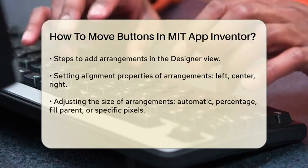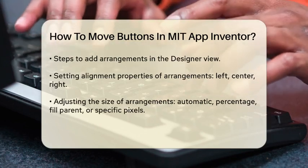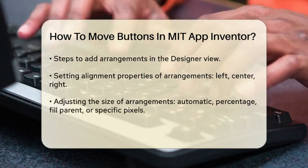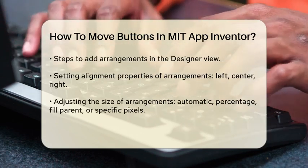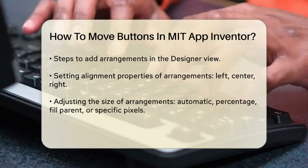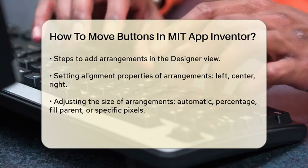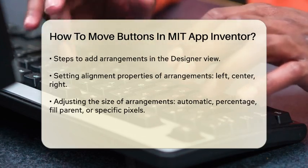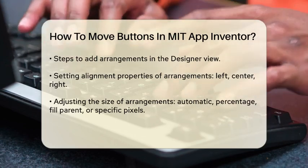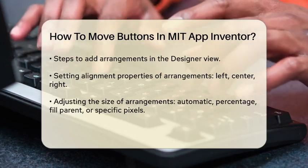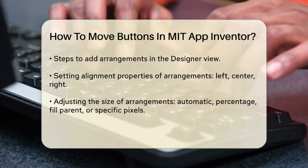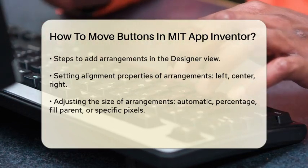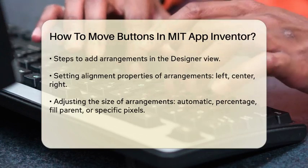Here's how you can do it. Open your App Inventor project and go to the Designer view. Drag and drop a vertical or horizontal arrangement onto your screen, depending on how you want your buttons aligned. Then drag your buttons into these arrangements. You can set the alignment properties of these arrangements to left, center, or right. This ensures that your buttons will be positioned consistently across different screen sizes.